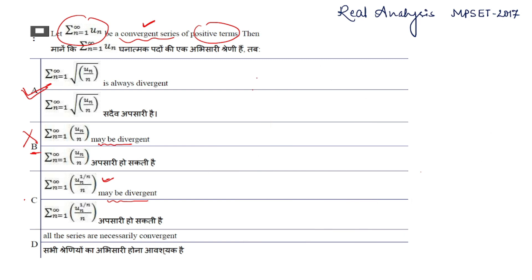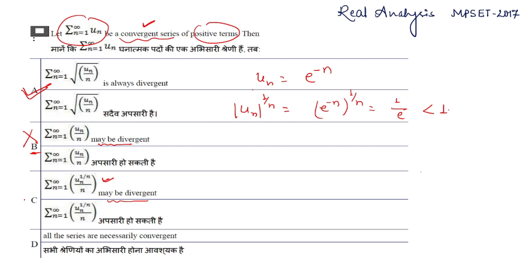To check option C, let uₙ = e^(−n). Then uₙ^(1/n) = (e^(−n))^(1/n) = 1/e, which is always less than 1. By the root test, if the limit of uₙ^(1/n) < 1, then the series Σuₙ is convergent. So this series e^(−n) is convergent.